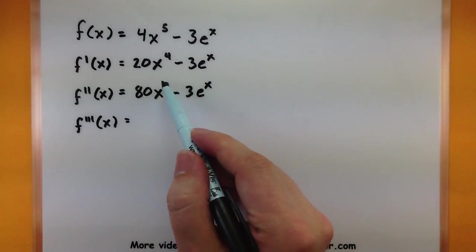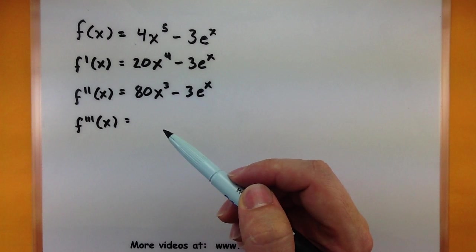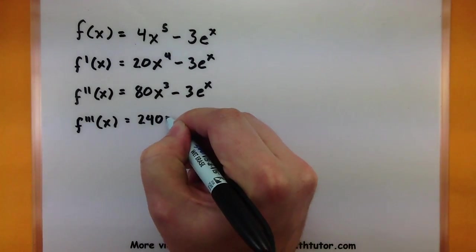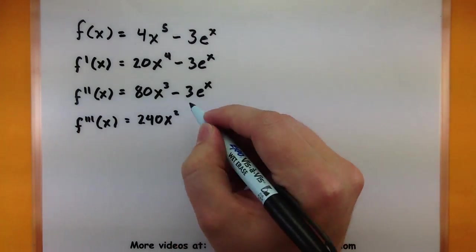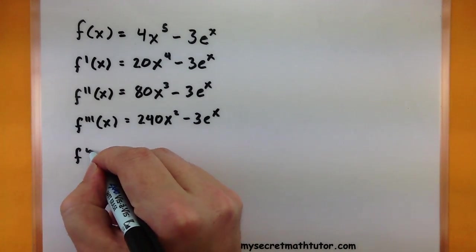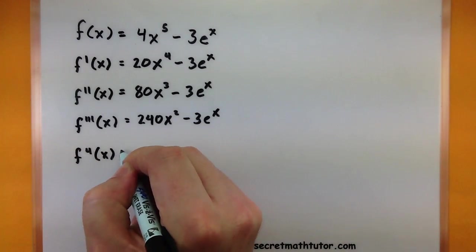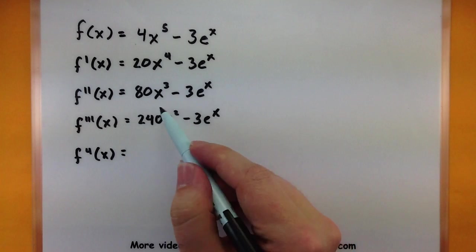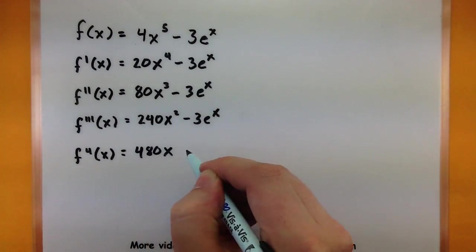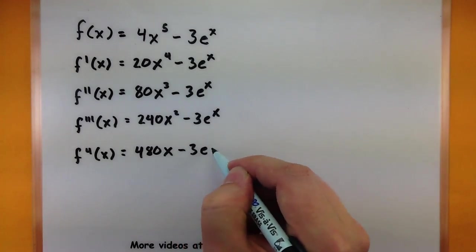Okay let's do it again. Third derivative bring down the power, 3 times 80 that'd be 240x squared minus 3e to the x. And why not, let's go ahead fourth derivative.